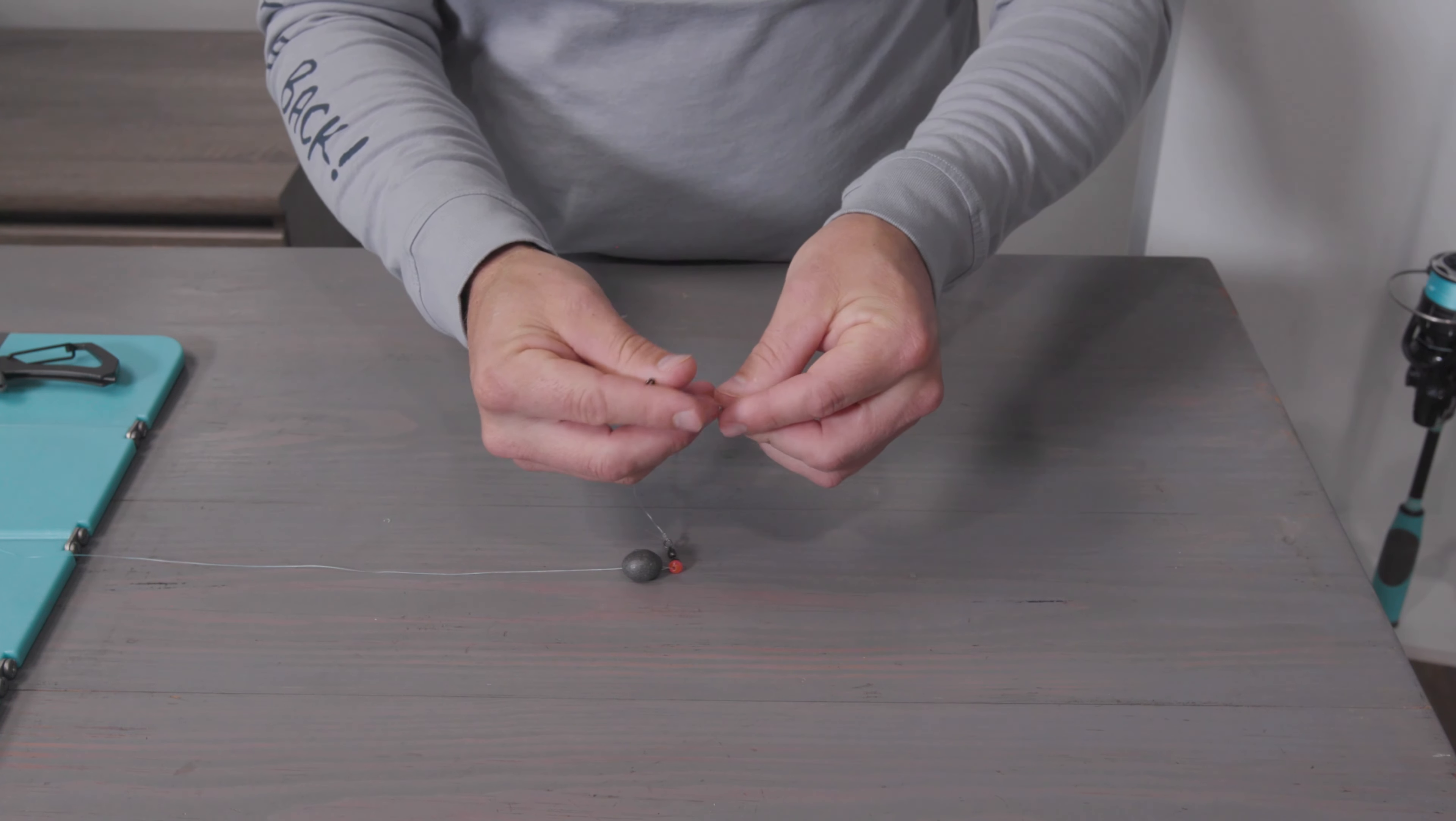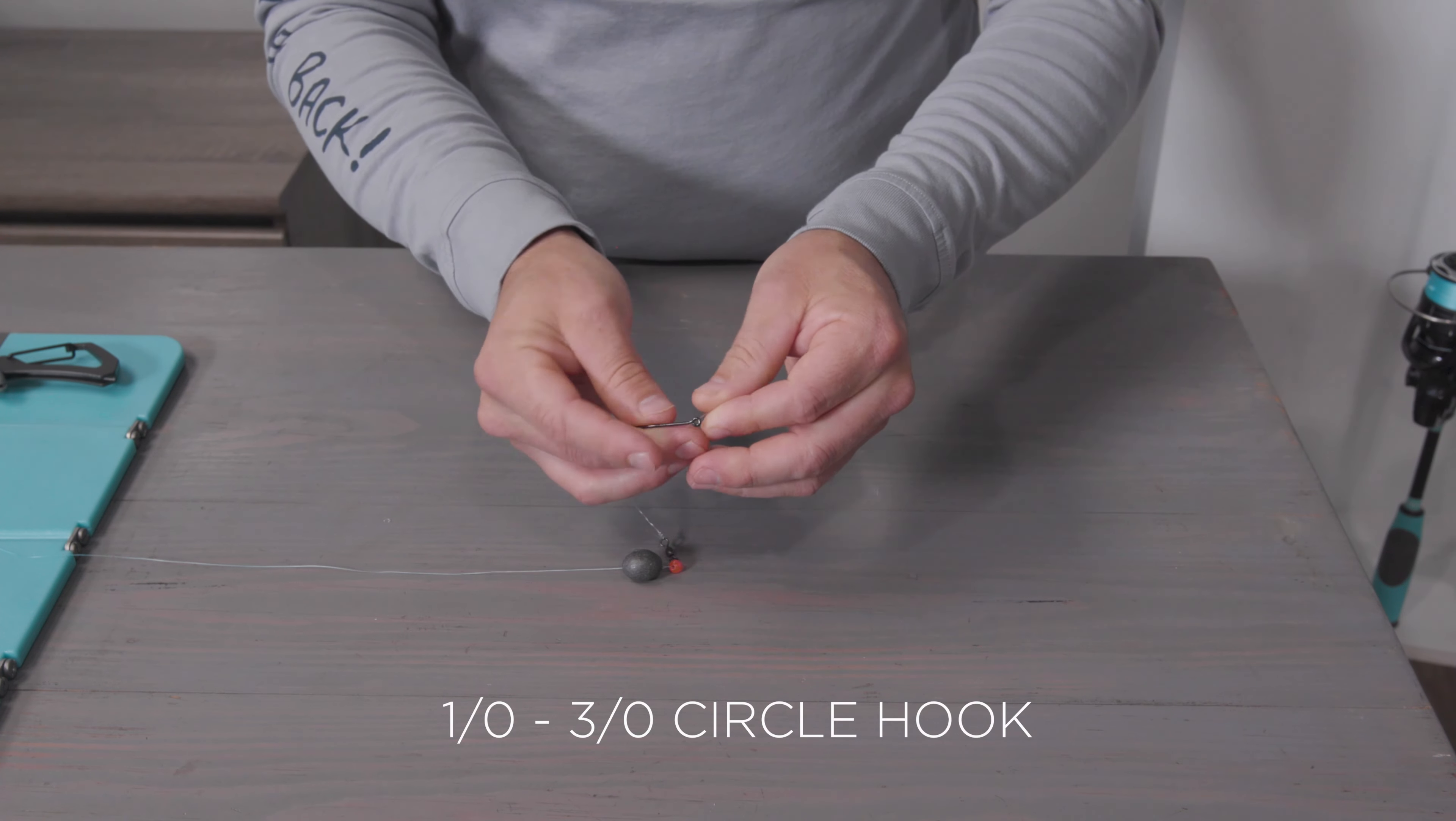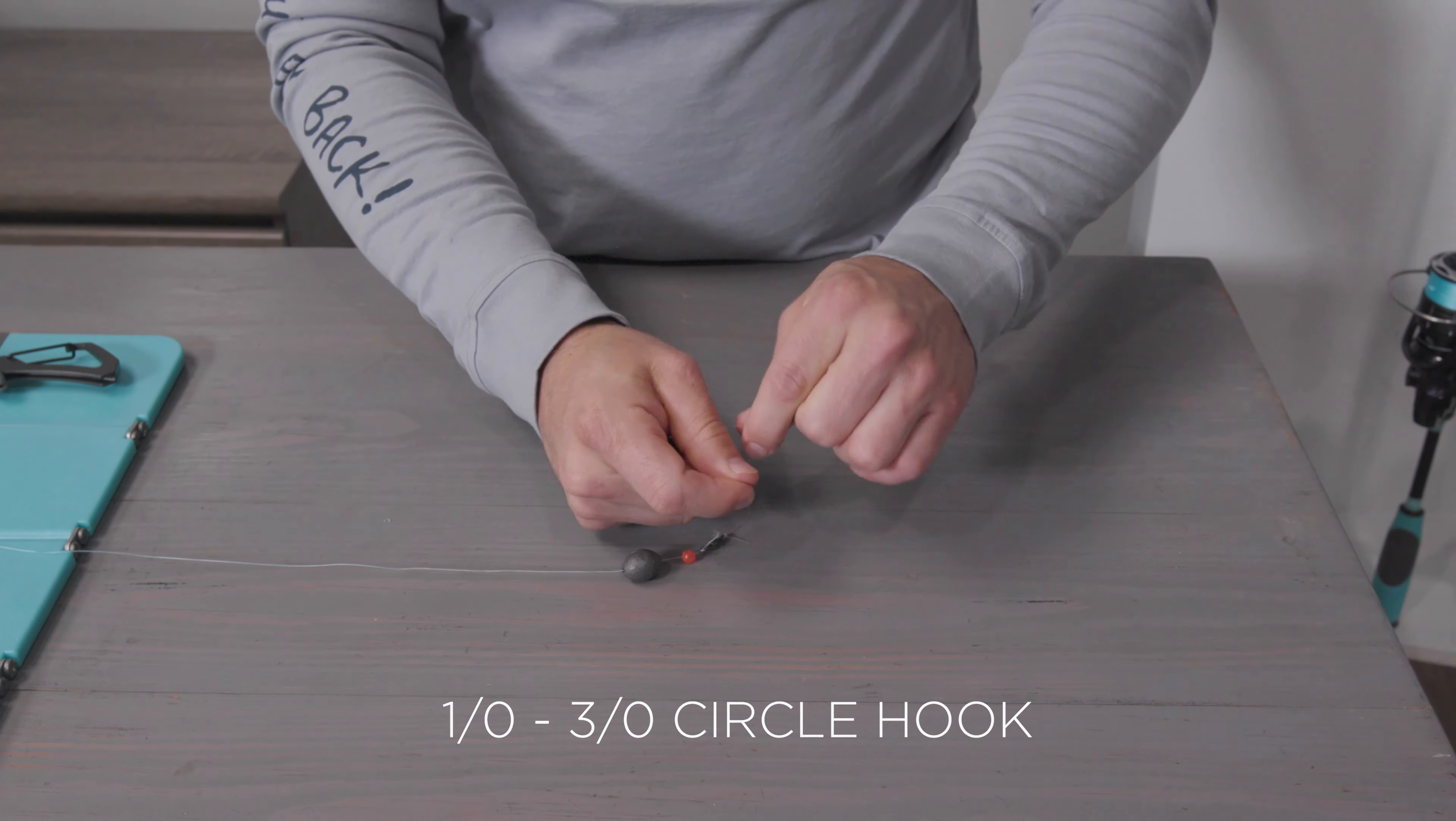Step number five: you want to apply a one-aught to a three-aught circle hook to the end of your leader.